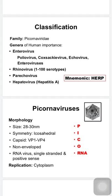In the genera enterovirus there are a group of viruses: poliovirus, coxsackievirus, echovirus, and other enteroviruses. Rhinovirus includes about a hundred serotypes, and the hepatovirus genera includes hepatitis A virus. It's very important to remember that hepatitis A virus belongs to family Picornaviridae.